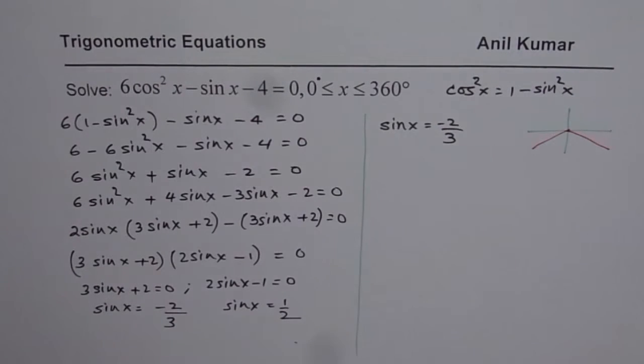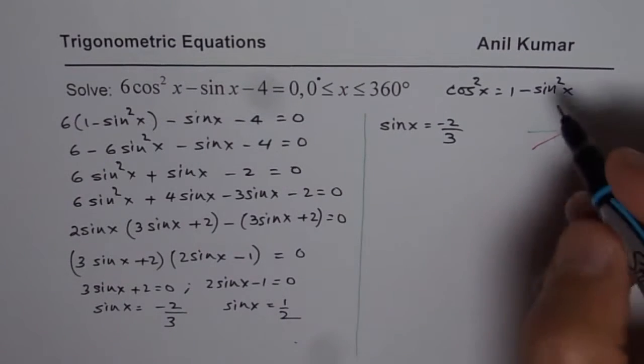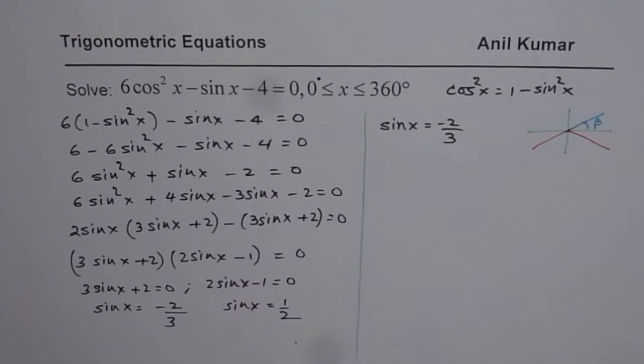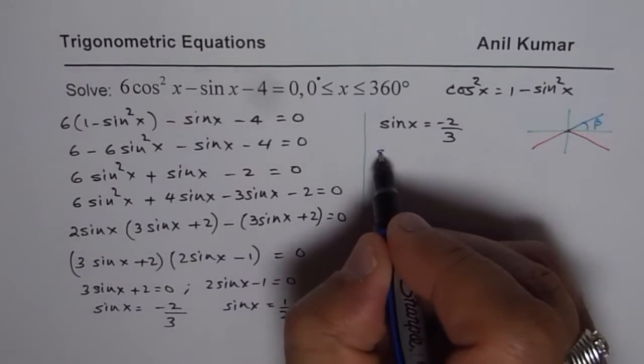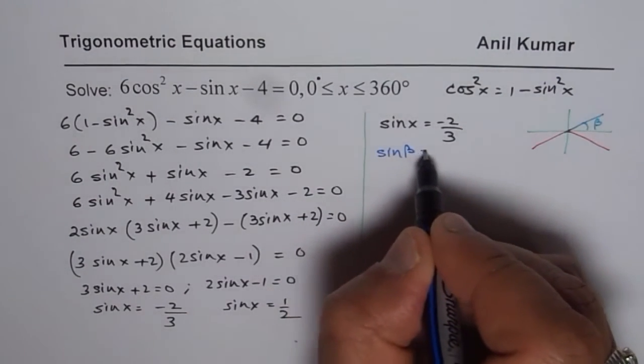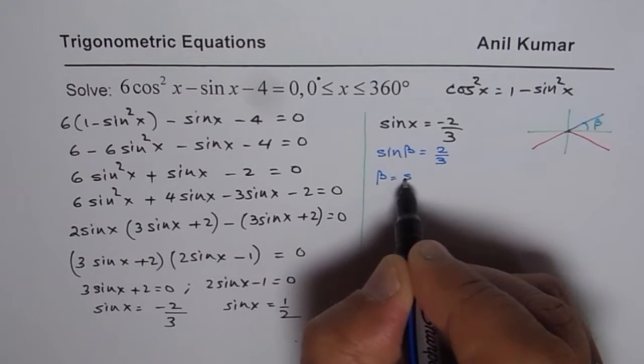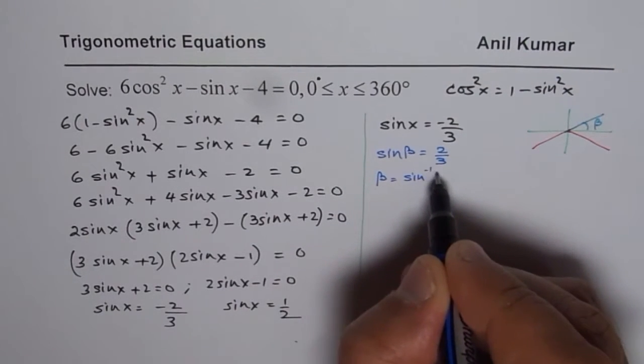But in the first case we will find the related acute angle. So we will find this related angle beta. So we say let sin beta be equals to positive value of 2 over 3. And then we say beta equals to sin inverse of 2 over 3.